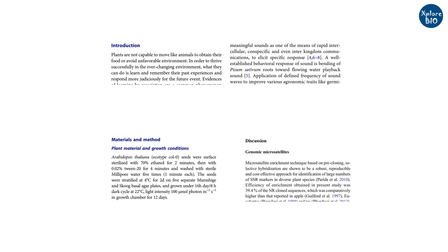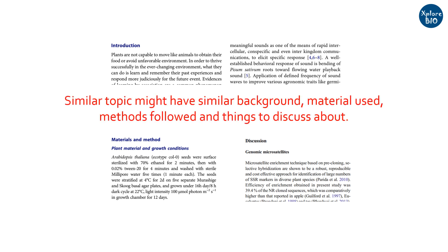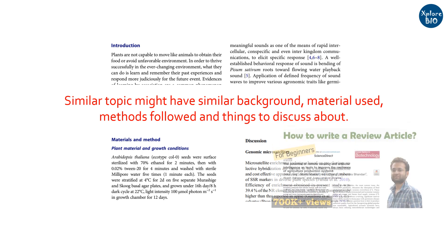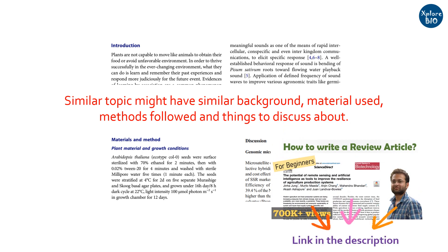If you publish a new paper on a similar research area or topic, there is a high chance you may write the same background, use the same materials and methodologies, and refer to your previous findings to improve the discussion. Similarly, when you write a review paper, you compile findings of several publications into one paper, which may result in plagiarism if not properly cited.